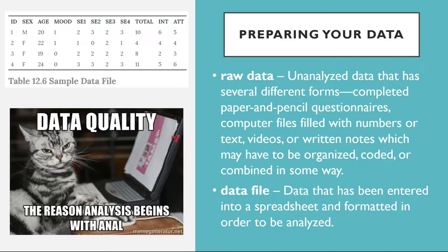The first column contains participant identification numbers. This is followed by columns containing demographic information like sex and age, the independent variables, mood and four self-esteem items, and the total of the self-esteem items, and finally dependent variables, which were intentions and attitudes. Categorical variables can be entered as a category label, like M or F for male and female, or as numbers, such as 0 for negative mood and 1 for positive mood. Although category labels are often clearer, some analyses might require numbers. SPSS allows you to enter numbers but also attach a category label to each number.